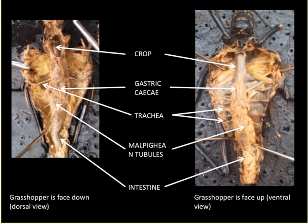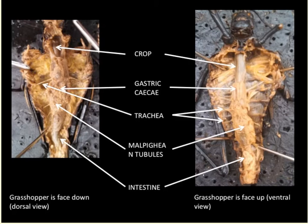As you begin your dissection of the grasshopper and make that incision on the ventral surface, be aware that it is best to use scissors rather than the scalpel. The grasshopper has a very tough exoskeleton, and it is actually easier to use scissors to cut through it. The scalpel may put too much pressure and damage the underlying organs.